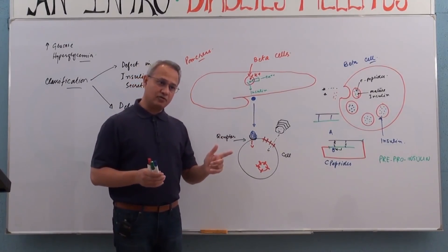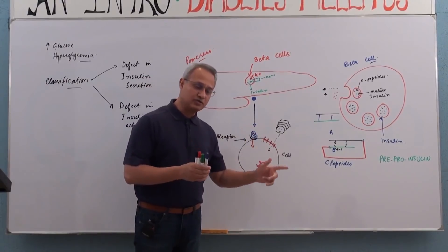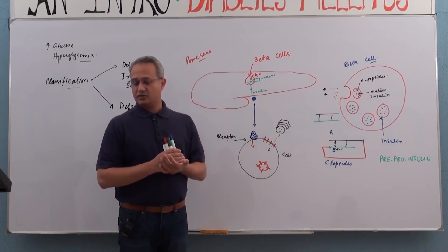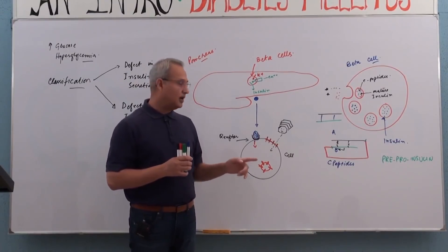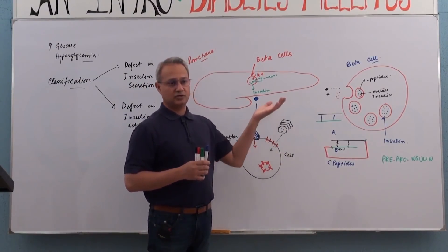That pile of glucose is going to cause problems. So the diabetic complications that you see are a result of this glucose peak.